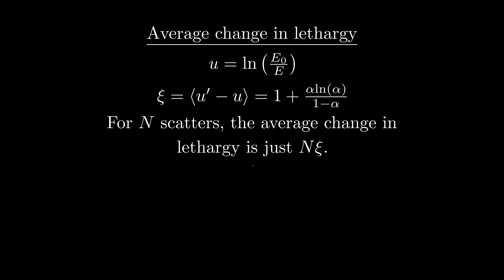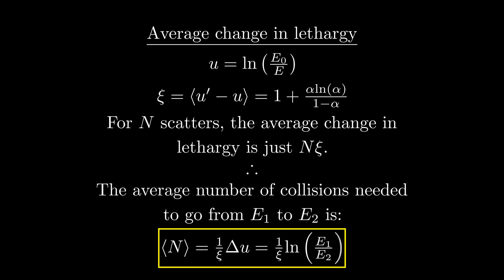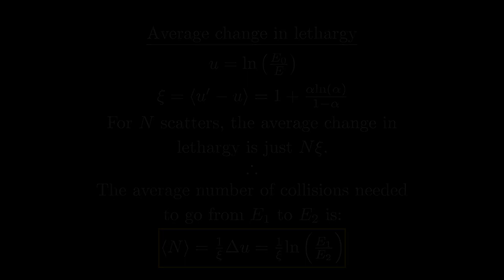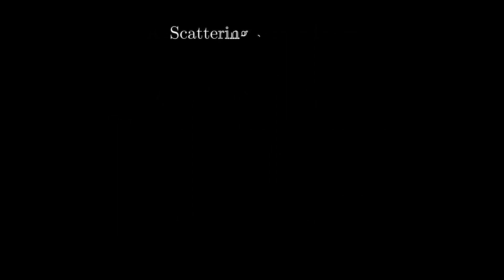We can sort of flip this around and find out how many scatters we expect it will take for a neutron to go from one energy to another with the formula n equals 1 over psi times the change in lethargy, or 1 over psi times the natural log of our initial energy divided by the final energy. To wrap things up, I want to show a quick simulation which sort of proves this out.